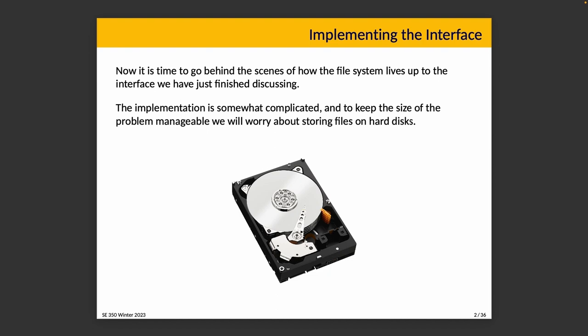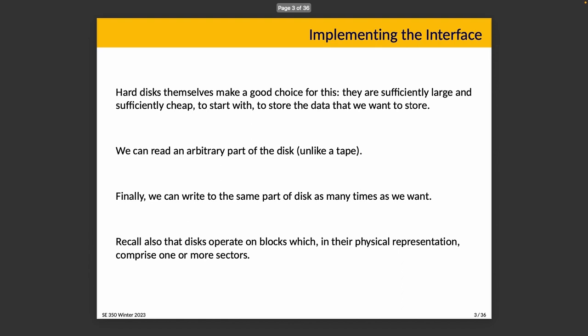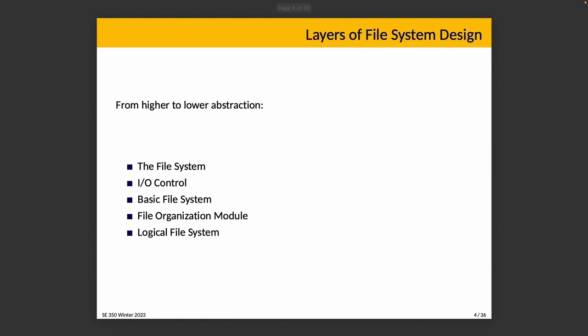Now we'll take a look at the file system design. We start at a high level inside the operating system, and as we move our way down we end up at lower and lower levels, closer towards the hardware, and with accordingly less and less abstraction. Up at the top we have the file system, which is exactly what we saw earlier — the user-facing side of things.